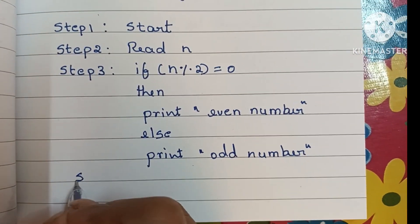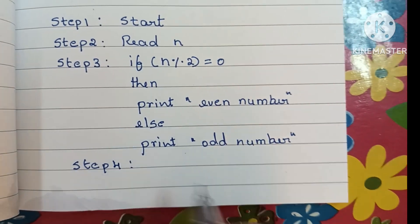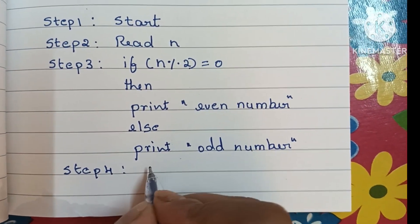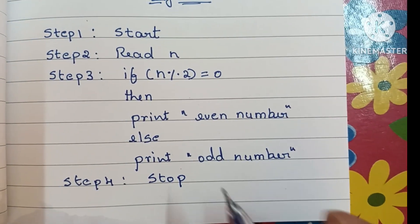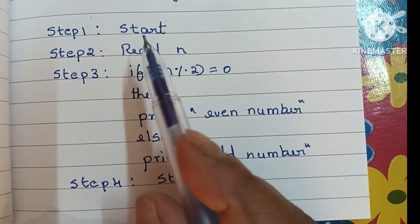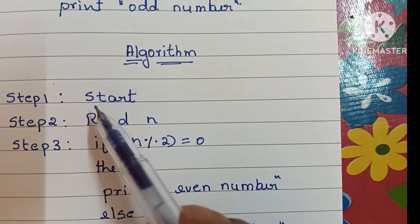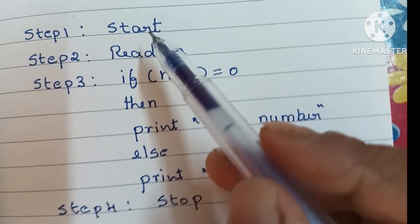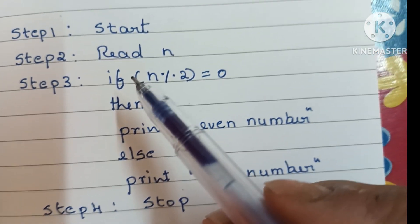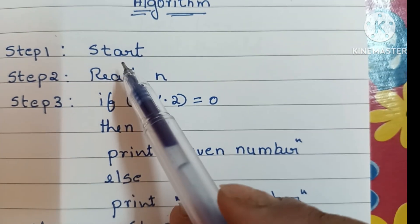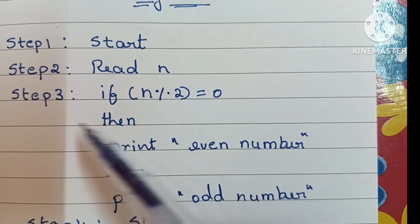In step 4, we terminate the algorithm using a stop statement. An algorithm always starts with a start statement and ends with a stop statement. So guys, this is the algorithm to check whether a given number is odd or even. It starts with start in step 1, and in step 2 we read the value of n.